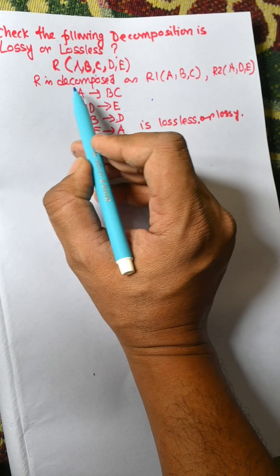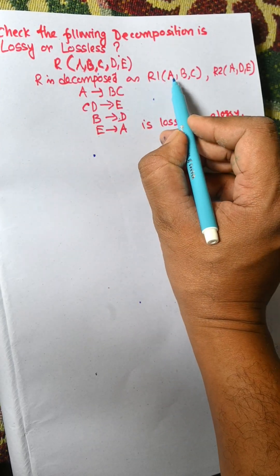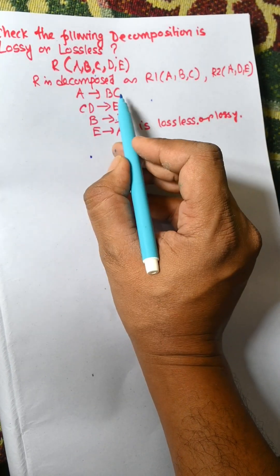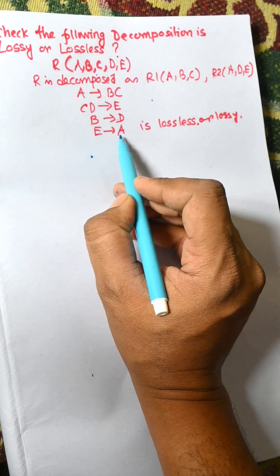R equal to ABCDE is given and R is decomposed into R1 ABC and R2 ADE. The functional dependencies are given: A arrow B, C arrow D, B arrow D, E arrow A. We need to check whether R1 and R2 are lossless or lossy decomposition.